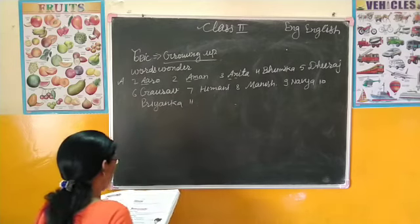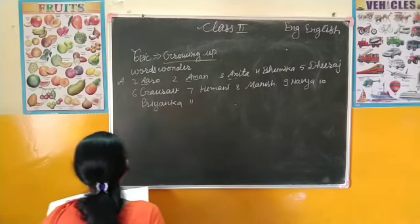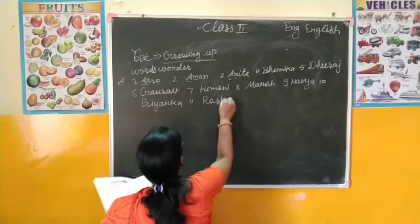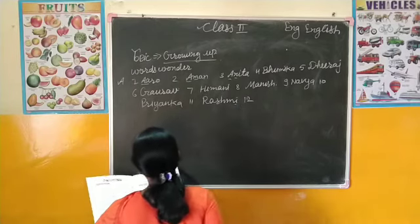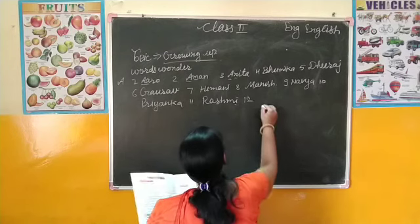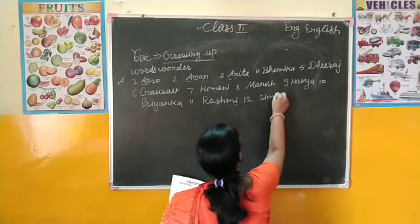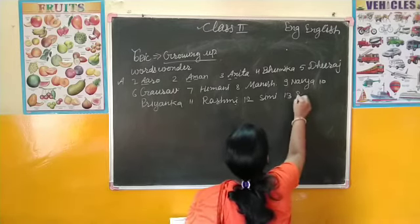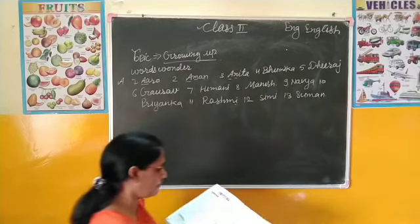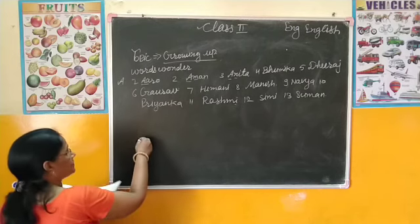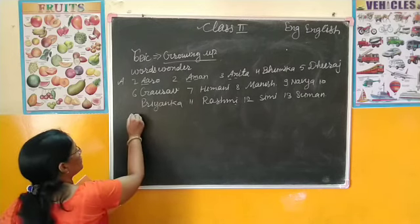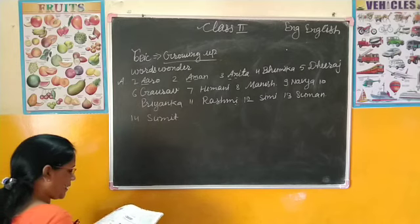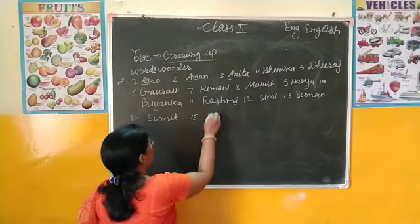फिर 11 Number देखेंगे - Q पे कोई नहीं है, R पे Rashmi है - R-A-S-H-M-I। 12 Number देखेंगे - इसमें Seemi है। और उसके बाद 13 पे Suman। 14 Number Sumit। And Last Number पे है Vishal - 15 पे Vishal।